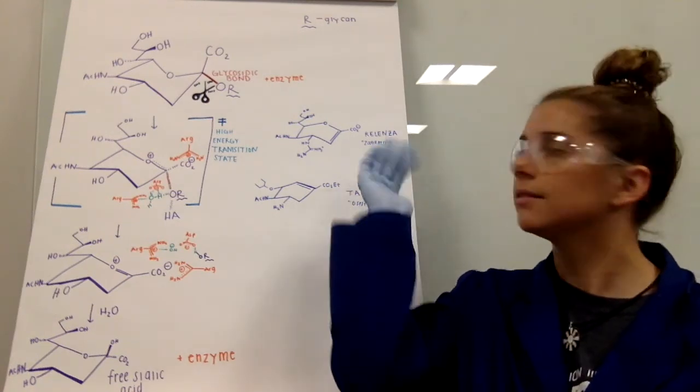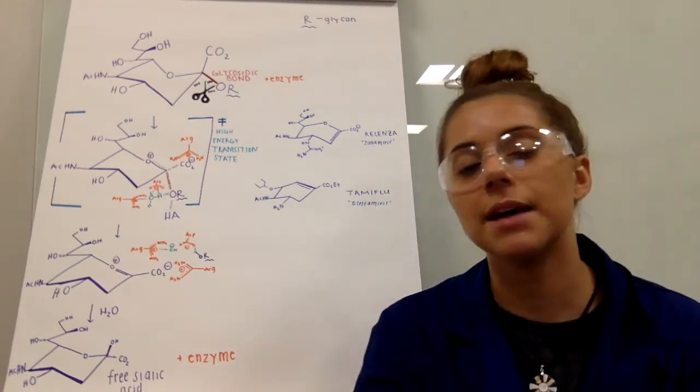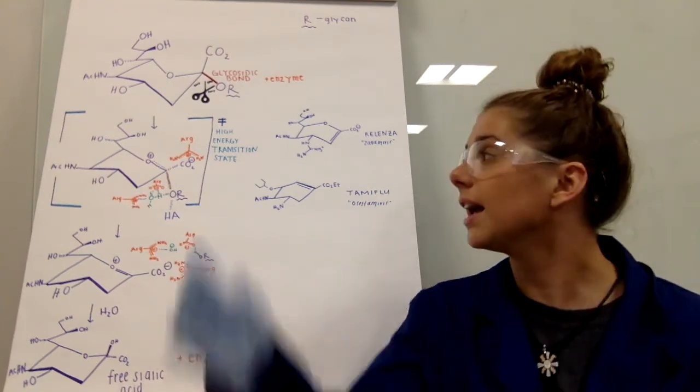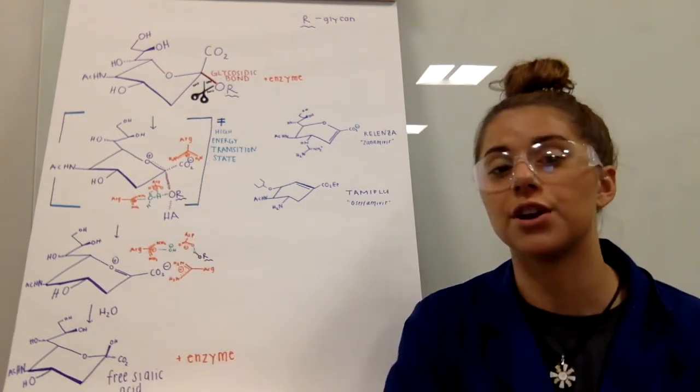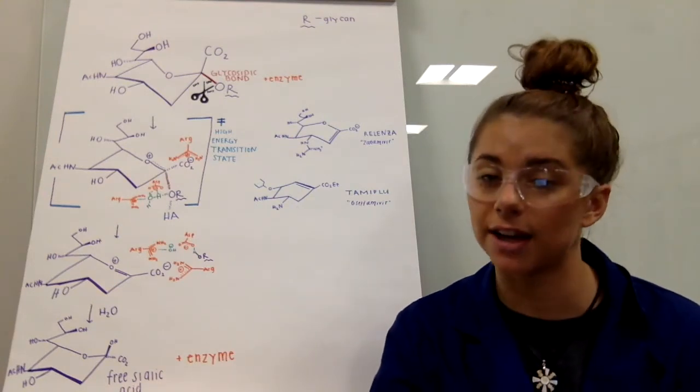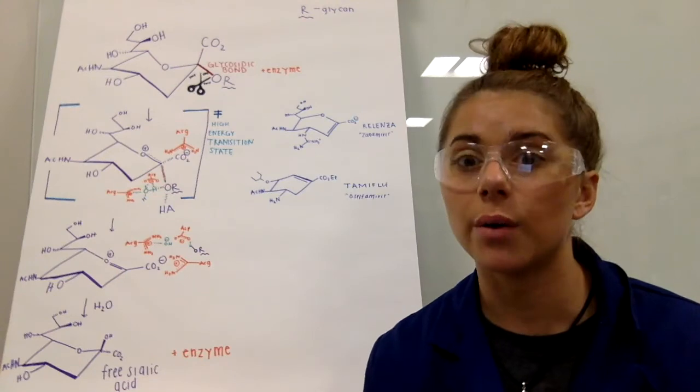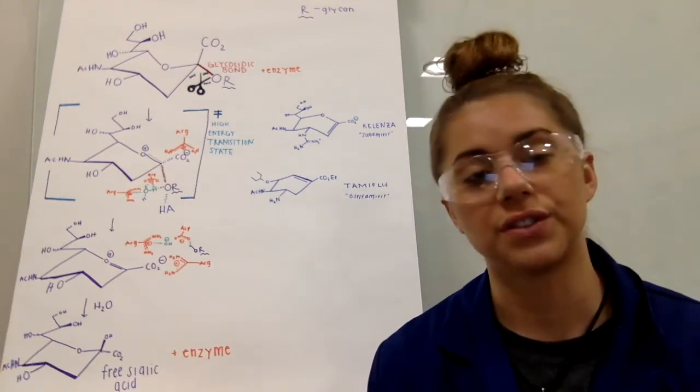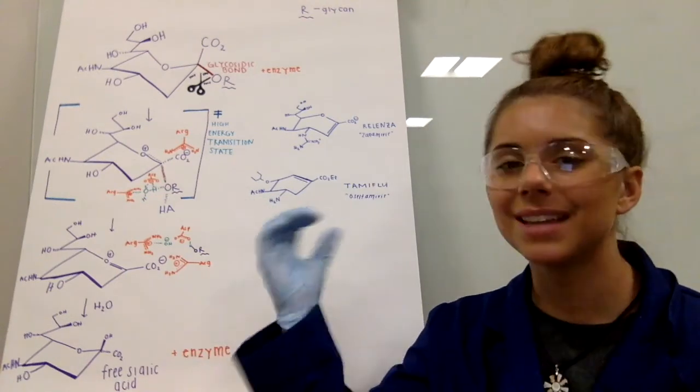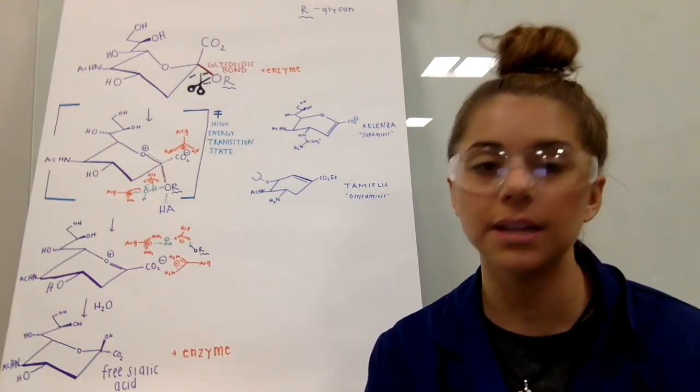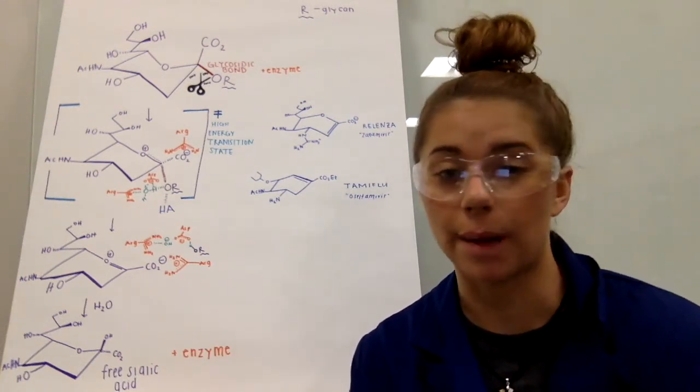such as Relenza and Tamiflu. These inhibitors are synthetic molecular structures that mimic the presumed high energy of the transition state of the neuraminidase-sialic acid reaction. These inhibitors mimic the reactive sialic acid group, and so they recognize the proteins on the surface of the virus. And then it binds to the enzyme, and the active site closes in on these inhibitors. And basically, they've taken out the main player in the propagation of the virus.